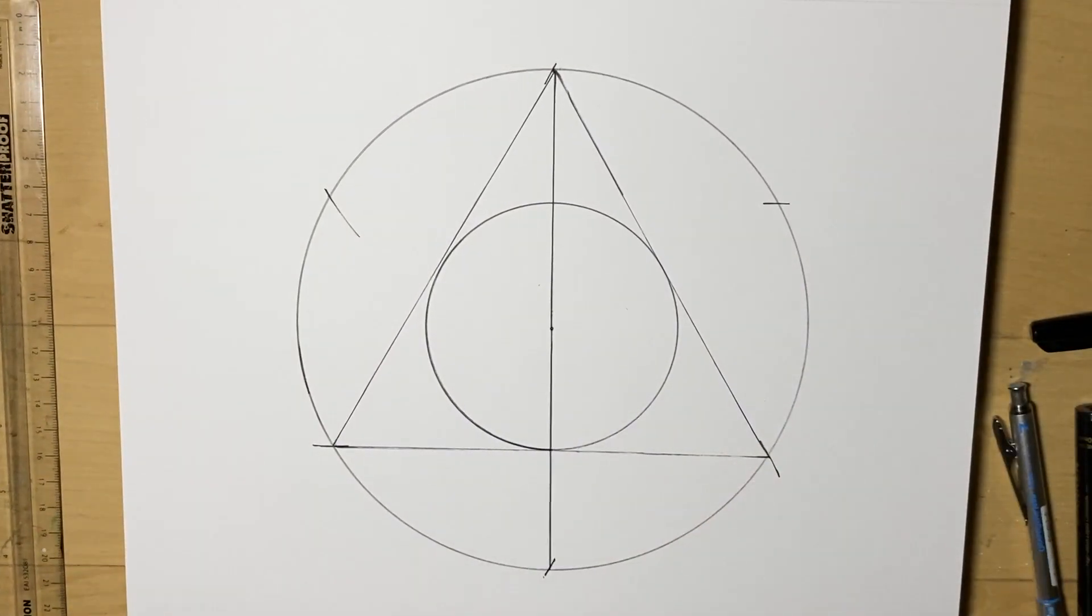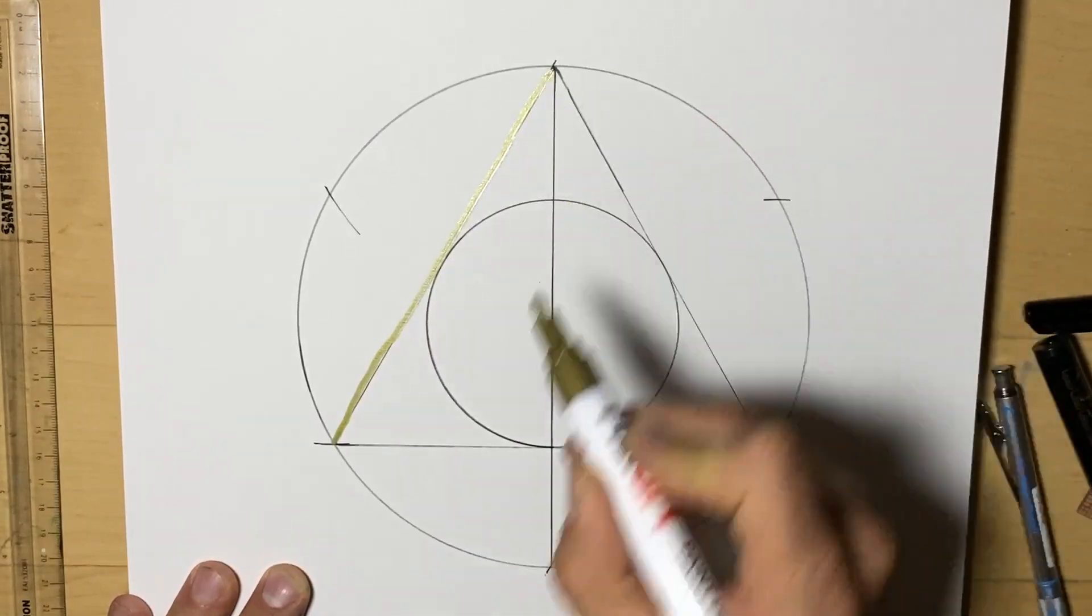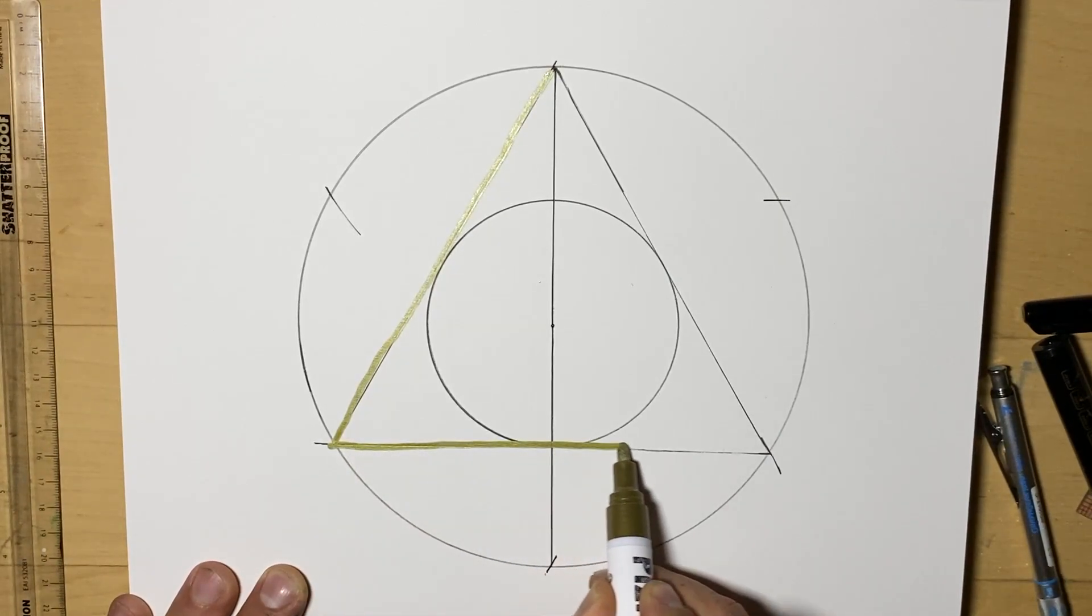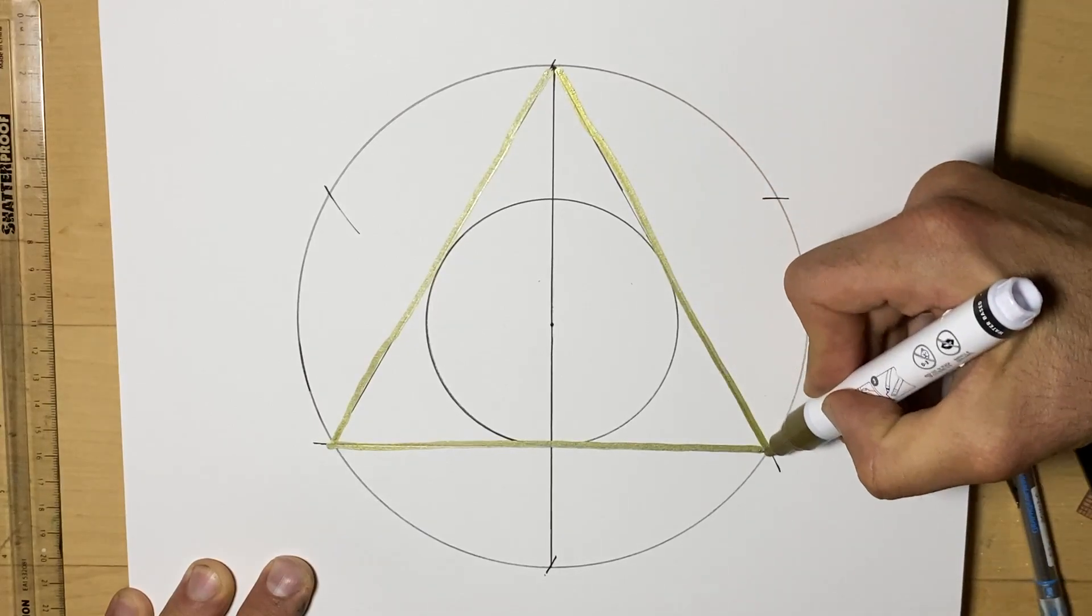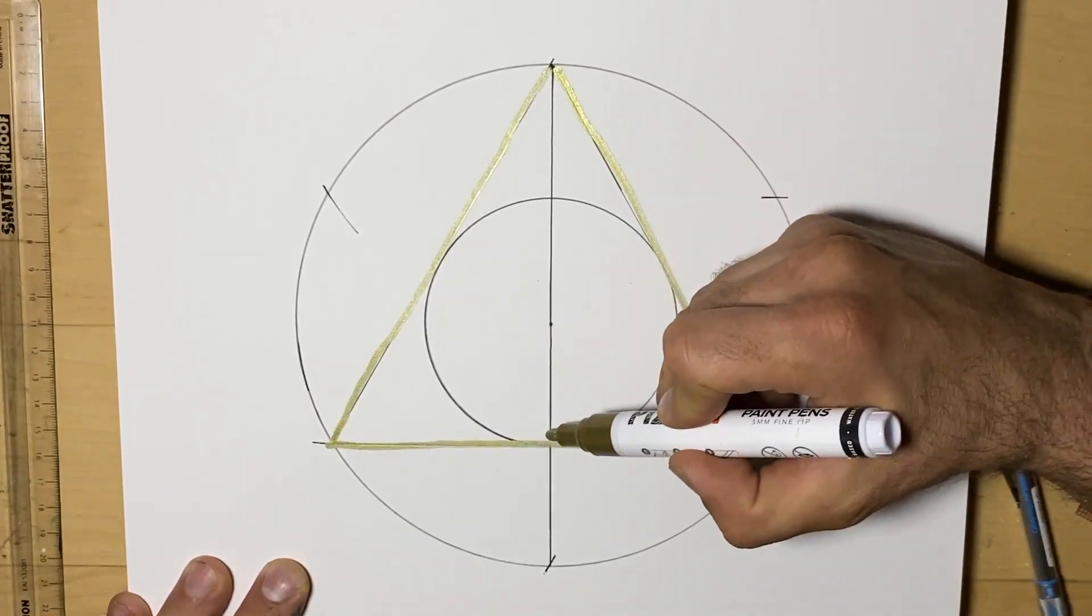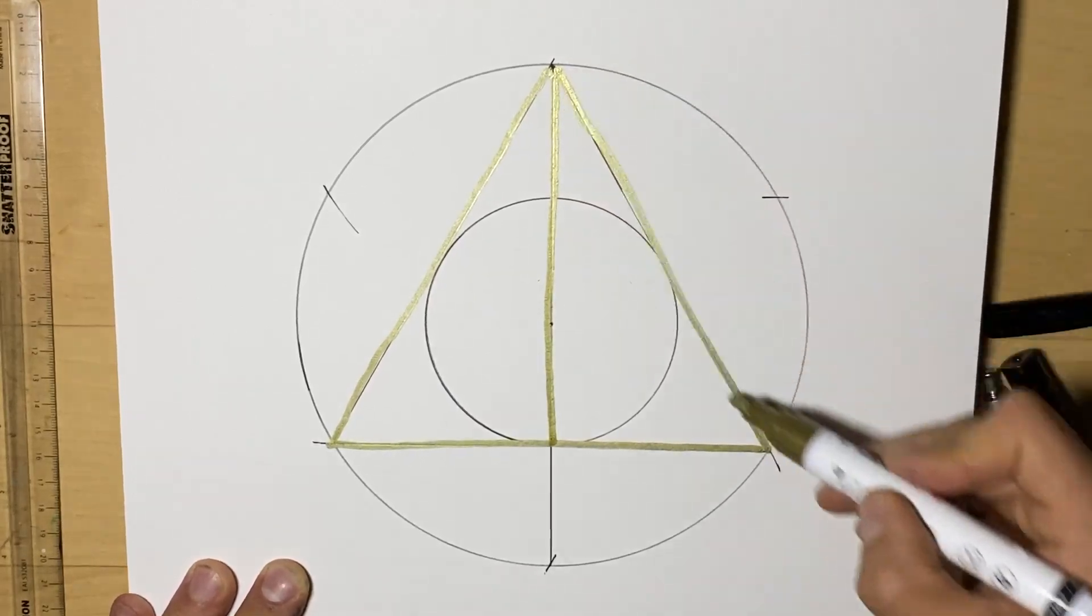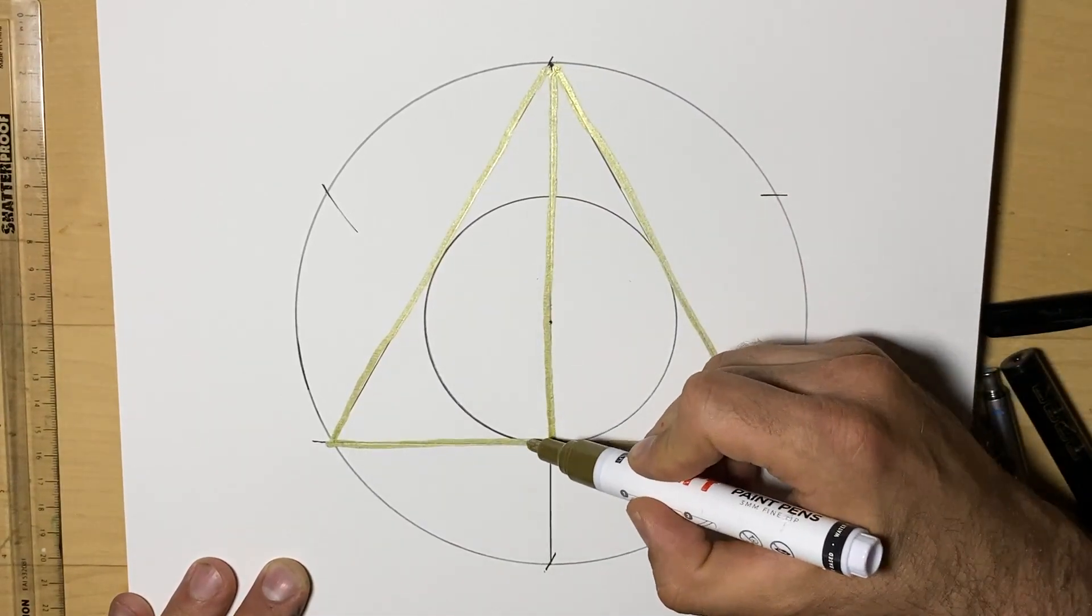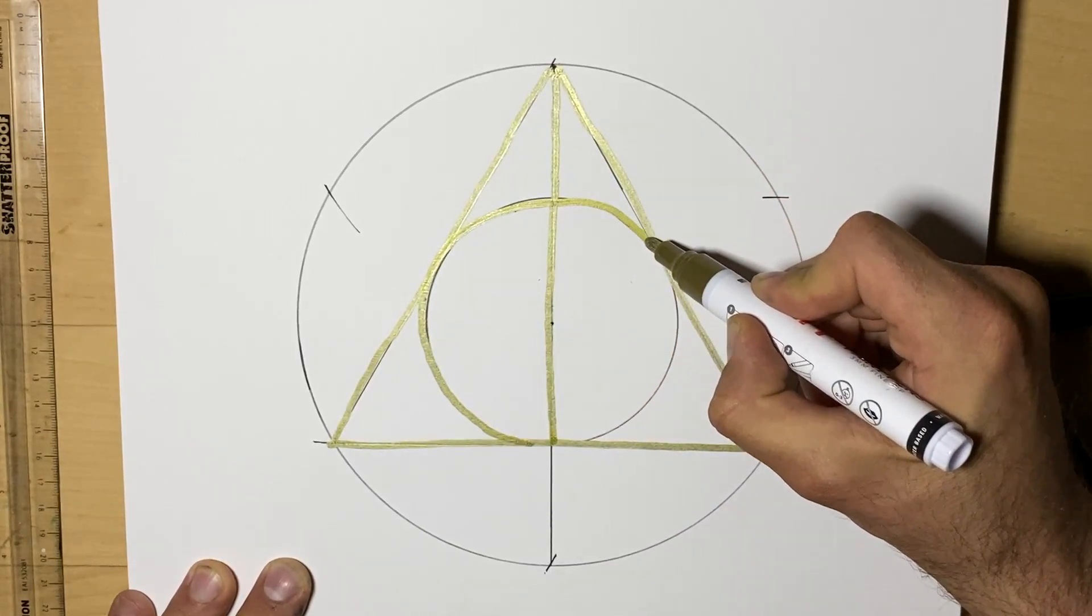So to finish this up, what we're looking at here is we have this triangle. We could use a ruler and a pen. And then we have the line representing the wand. The triangle was your invisibility cloak. And then, of course, we have that circle which represents the Philosopher's Stone.